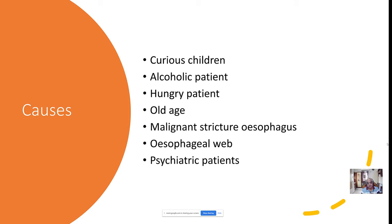Old age is another big problem — elderly patients wear dentures and may fall asleep without removing them. When sleeping with their mouth open, the denture can slip into the oropharynx and get stuck in the cricopharynx — the most dangerous foreign body. Malignant lesions in the esophagus can cause narrowing where normal food particles get impacted. The presence of an esophageal web can also cause narrowing where food particles get impacted.